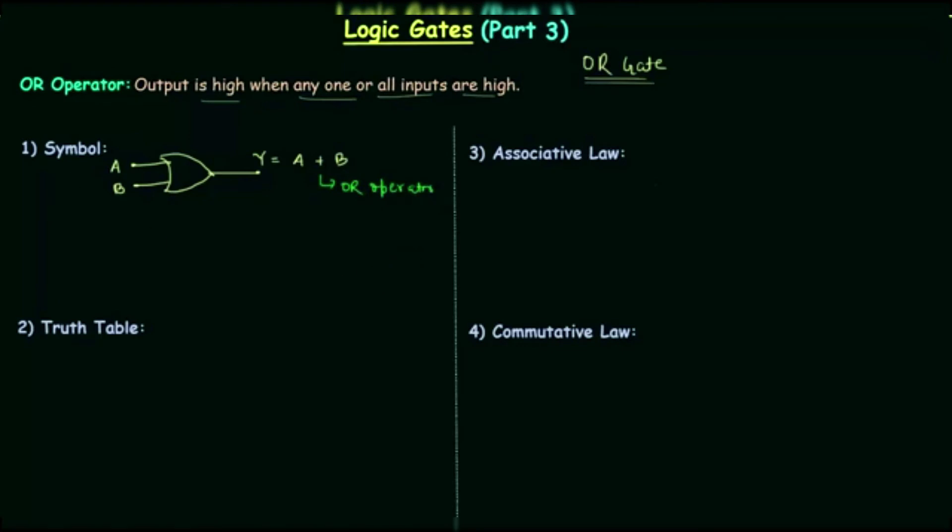Now I will make three input OR gate. The output is Y and the inputs are A, B and C. So output is equal to A OR B OR C. So this is all about symbol for OR gate.